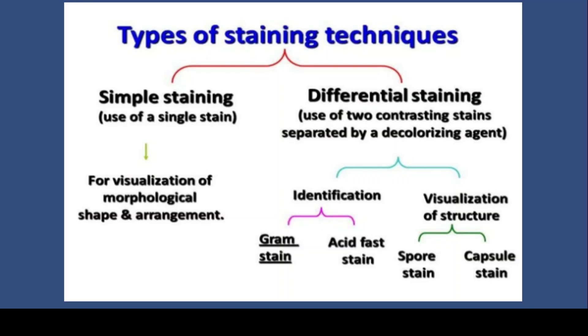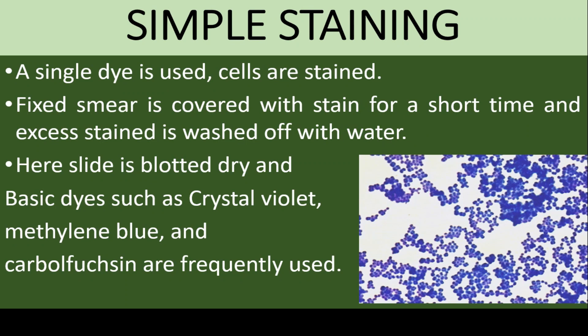There are two types of staining techniques: simple staining and differential staining. In simple staining, only a single stain is used. It is used for visualization of the morphological shape and arrangement of cells or bacteria. The fixed smear is covered with stain for a short time, and excess stain is washed off with water. The slide is then blotted dry. Basic dyes such as crystal violet, methylene blue, and carbol fuchsin are frequently used.